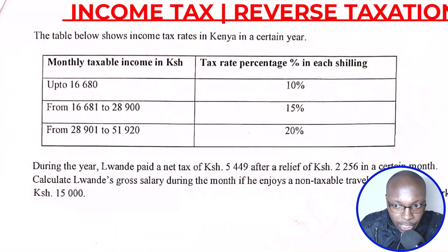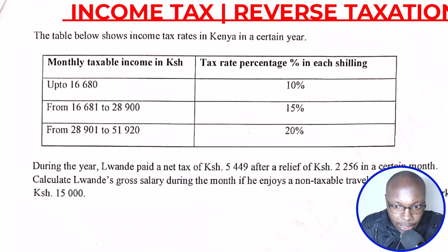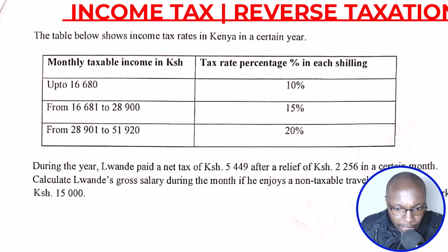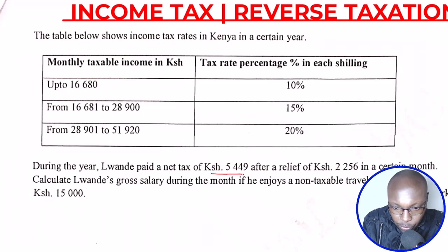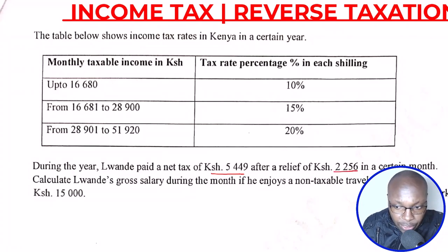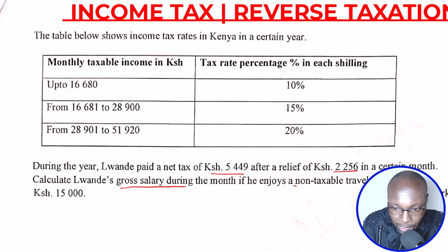Welcome. Let's have this question on income tax involving reverse taxation. The table below shows income tax rates in Kenya in a certain year, with monthly taxable income in Kenyan shillings and tax rate percentage in each shilling. During the year, Luande paid a net tax of 5,449 — very important to note this — after a relief of 2,256 in a certain month. Calculate Luande's gross salary during the month if he enjoys a non-taxable travel allowance of 15,000.